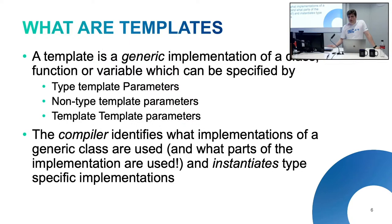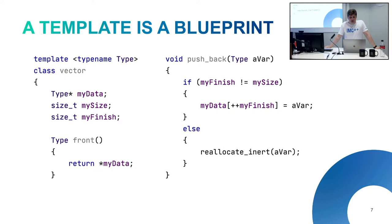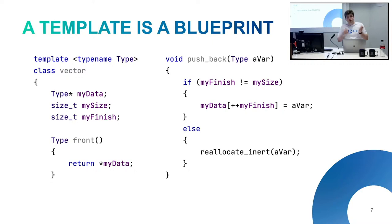So what does instantiation mean? Say we look at a very crude implementation of a vector. It's a template — template typename type — and it stores types, has a size and a finish and a front. If I say I want a vector of strings, all I do is replace the word 'type' with 'string' in these classes. Push back would take a string, front would return a string, and my data would be a string pointer. That's what a template is — a blueprint for building a class.